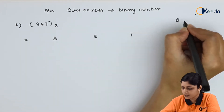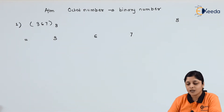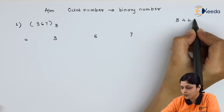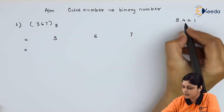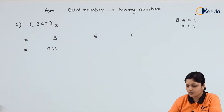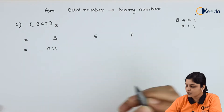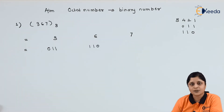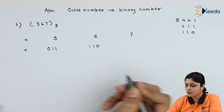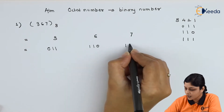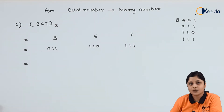You have one method: write down 3, 6, 7 with space using the 8-4-2-1 method. For 3: 2 plus 1 is 3, so binary will be 0 1 1. Your system is octal, that's why three bits are required, not 4. For 6: 4 plus 2 gives you 6, that's why 1 1 0. For 7: 4 plus 2 plus 1 gives you 7, write down 1 1 1.